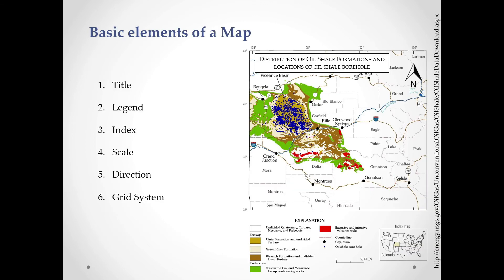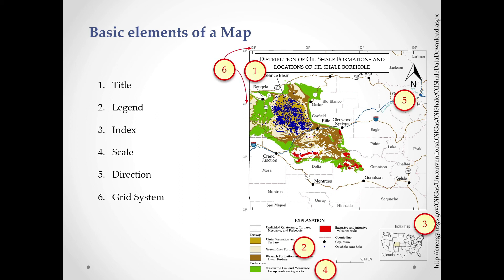The basic elements of a map are: title, legend, index, scale, direction, and grid system. If you see any map, you will find these basic elements. The title is first, then the legend, then the index, then the scale of the map, then direction — indicating north, south, east, and west — and finally the grid system.